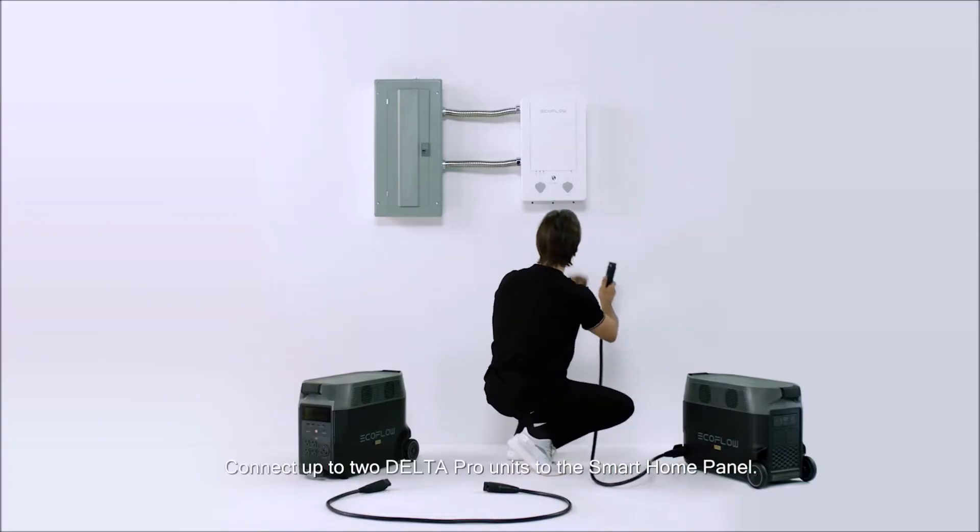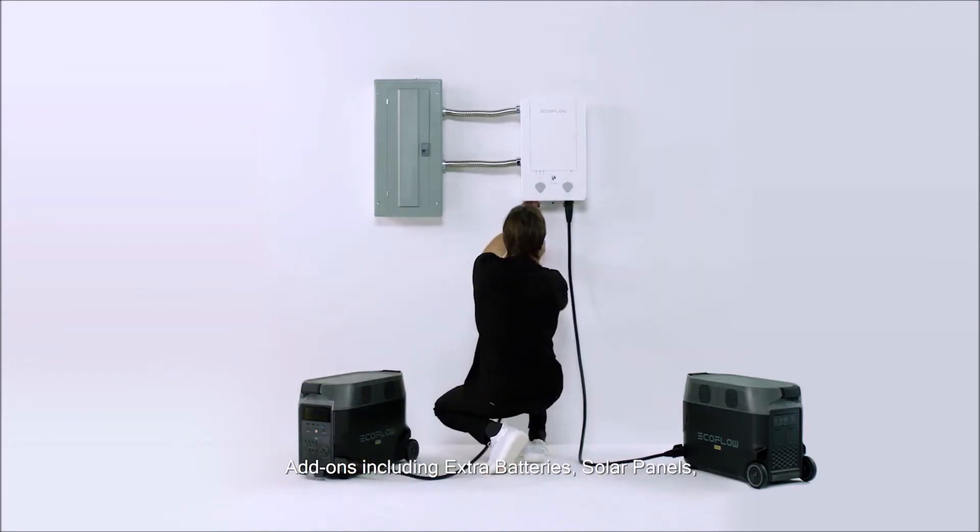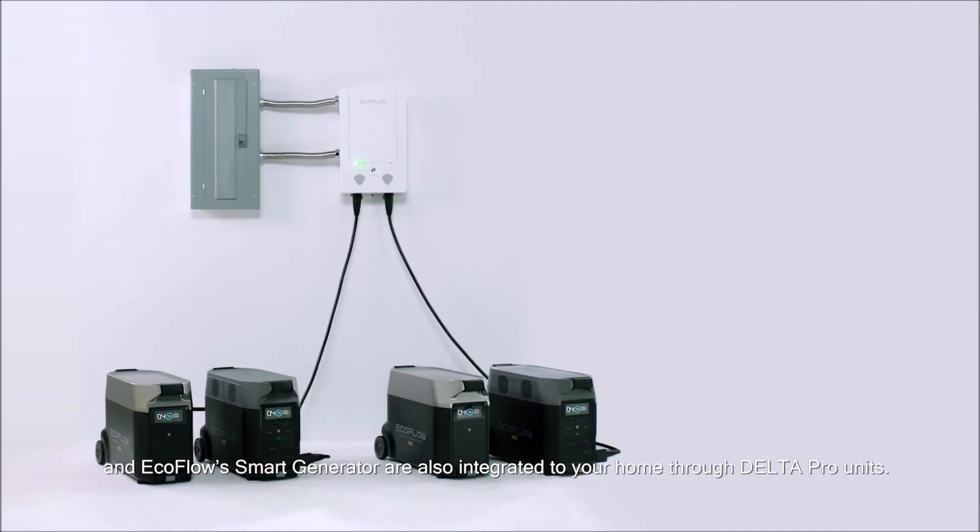Connect up to two Delta Pro units to the smart home panel. Add-ons including extra batteries, solar panels, and EcoFlow smart generator are also integrated to your home through Delta Pro units.